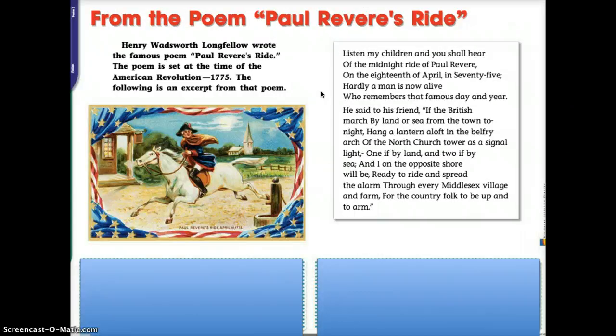Let's read this one more time. From the poem Paul Revere's Ride: Henry Wadsworth Longfellow wrote the famous poem Paul Revere's Ride. The poem is set at the time of the American Revolution, 1775. The following is an excerpt from the poem. Listen, my children, and you shall hear of the midnight ride of Paul Revere on the 18th of April in '75. Hardly a man is now alive who remembers that famous day and year. He said to his friend, if the British march by land or sea from the town tonight, hang a lantern aloft in the belfry arch of the North Church Tower as a signal light. One if by land and two if by sea, and I on the opposite shore will be ready to ride and spread the alarm through every Middlesex village and farm for the country folk to be up and to arm.